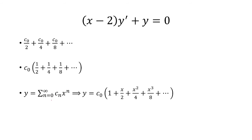So I can factor out the c sub 0, and recall that we said y is the sum from n equals 0 to infinity of c sub n times x to the n. So here I have the solution y equals c sub 0 times 1 plus x over 2 plus x squared over 4 plus x cubed over 8, et cetera. So you may be wondering why do I have the 1 here. Because recall when n equals 0, I have c sub 0 x to the 0, that's just c sub 0.